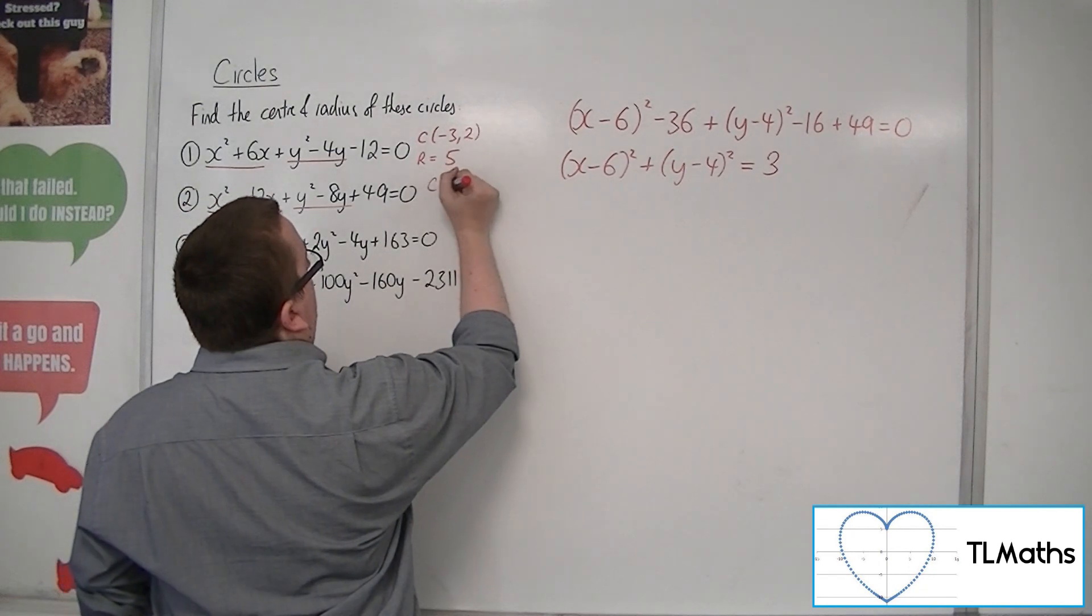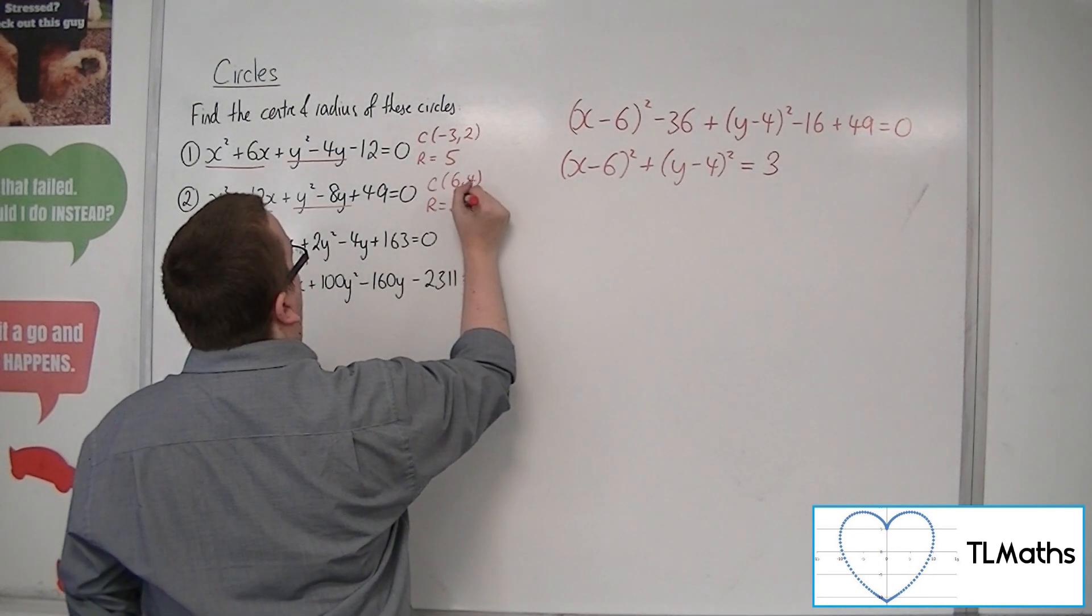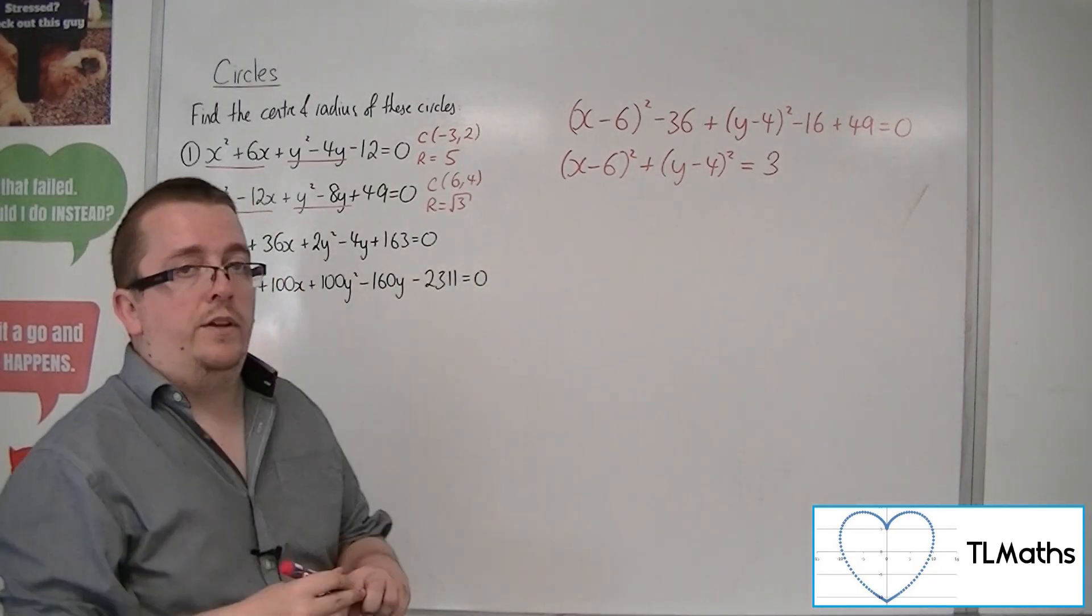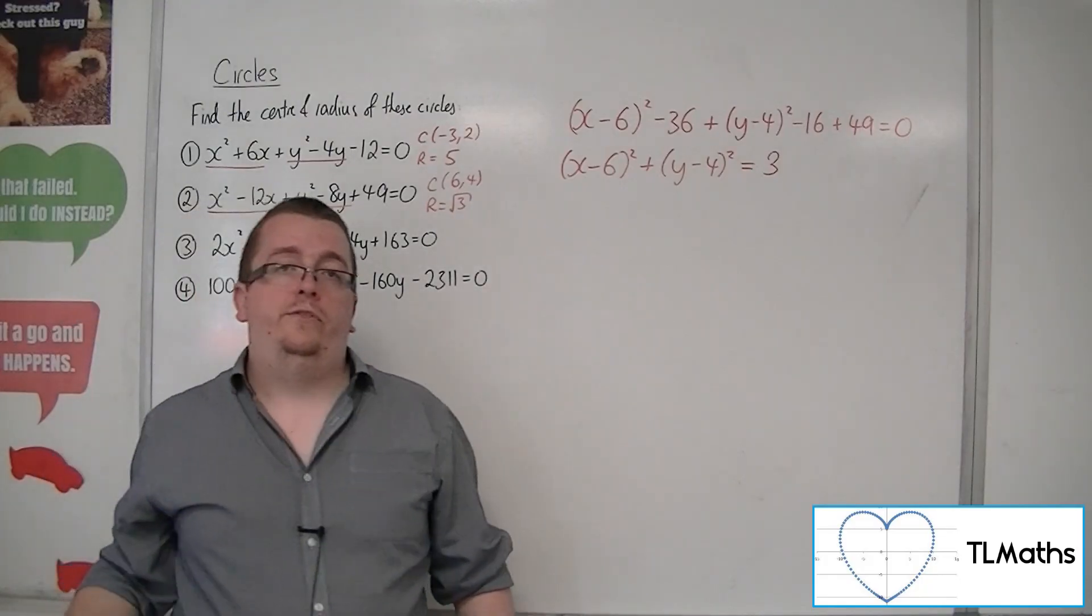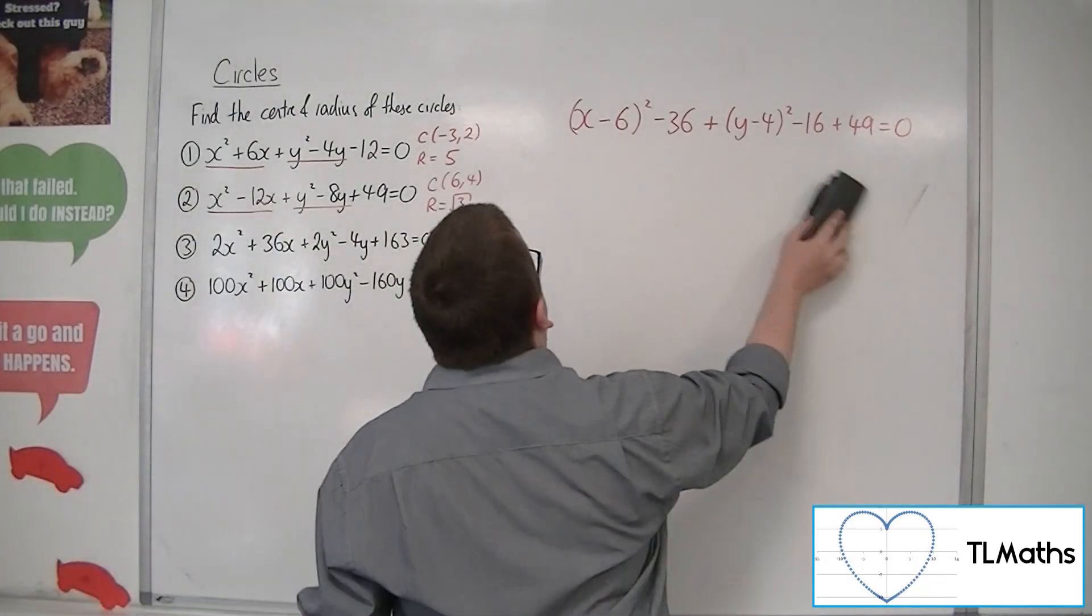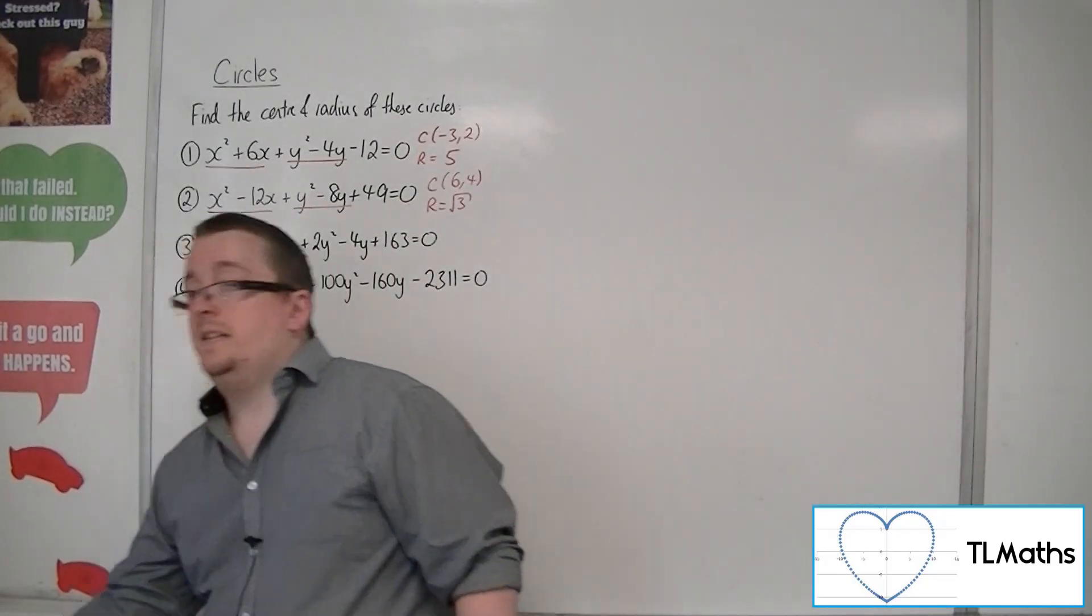And so I can say that the centre is at 6, 4, and the radius will be the square root of 3. Now always remember that it is only the positive root of 3. You don't get a negative 3 because the radius is a length, and we can't have a negative length.